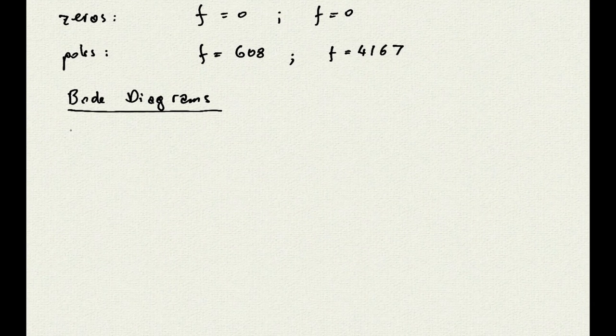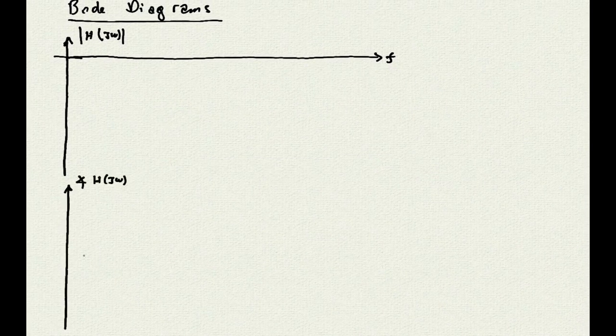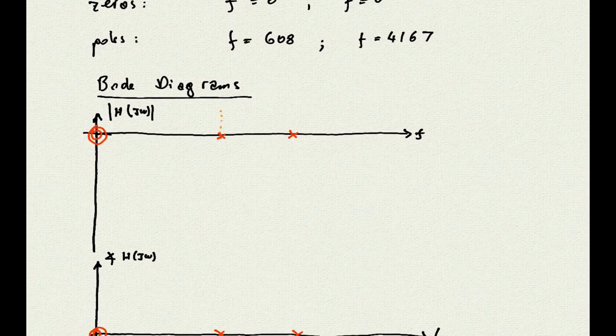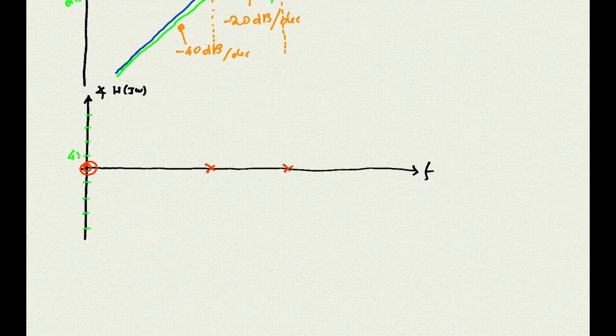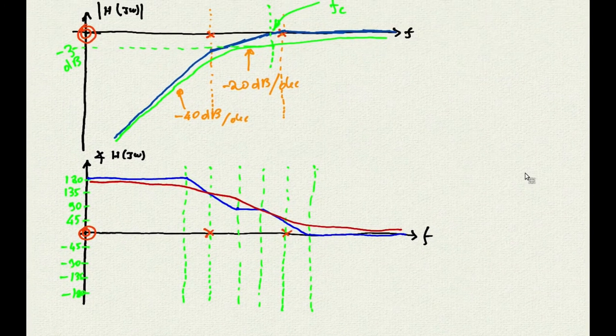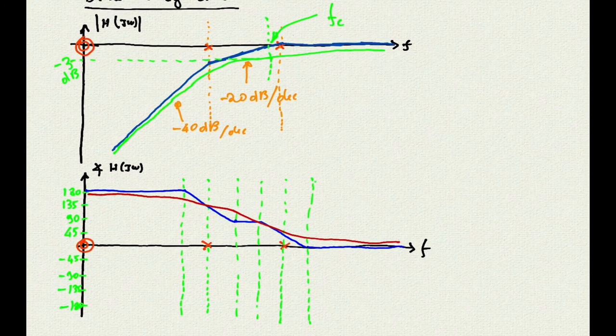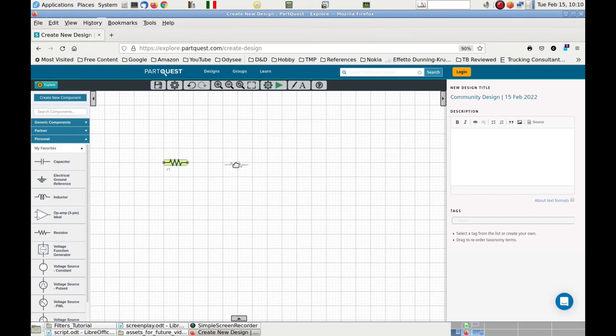These poles and zeros are very similar to those for the RC filter, and so are the Bode diagrams that can be derived from them.